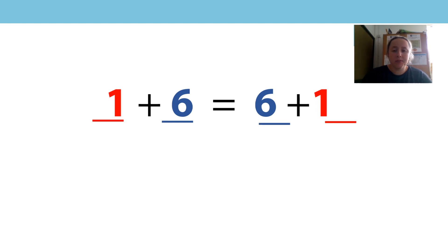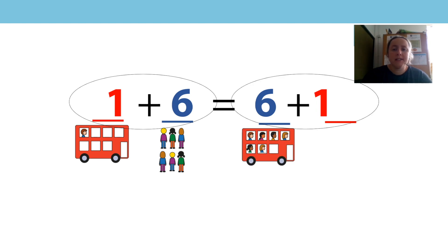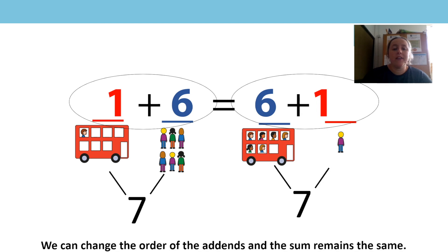Let's look at this as a story. On the first side, first one person is on the bus, then six more people get on the bus. On the second side, six people are on the bus and one more person gets on the bus. Both sides sum to seven. Because both sides sum to seven, we can put an equal sign between both sides as they have equal value. Remember, we can change the order of the addends and the sum remains the same.